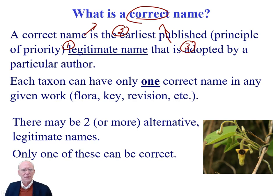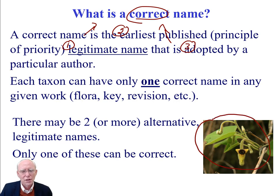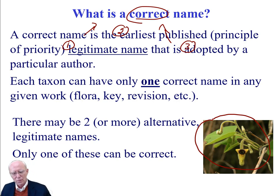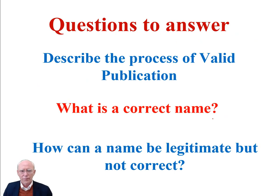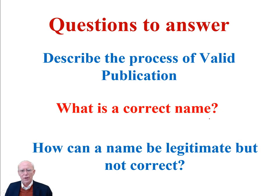So: only one correct name in a given flora, but there can be more than one legitimate name. A correct name is the earliest published name — principal priority — and it's got to be legitimate and adopted by a particular author. Those three things together mean correct. Later on when we talk about practical cases, we'll look at this plant, which is called either Aristolochia or Isotrema. Both names are legitimate and both have been published in botanical works.